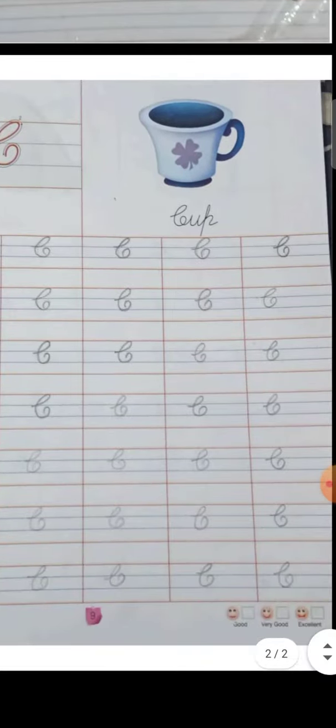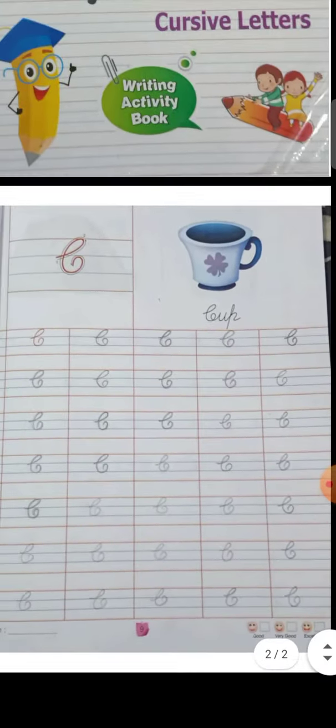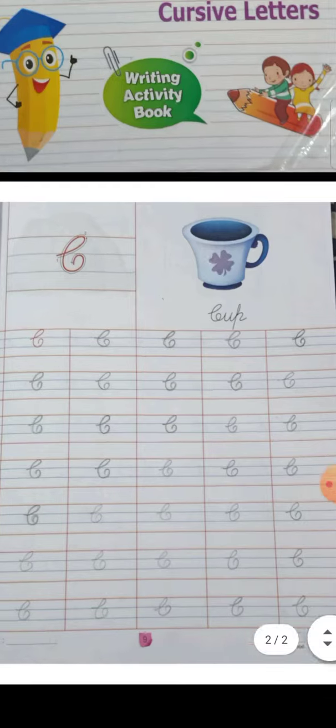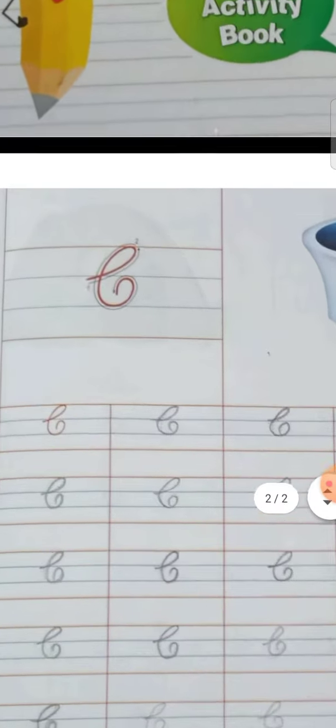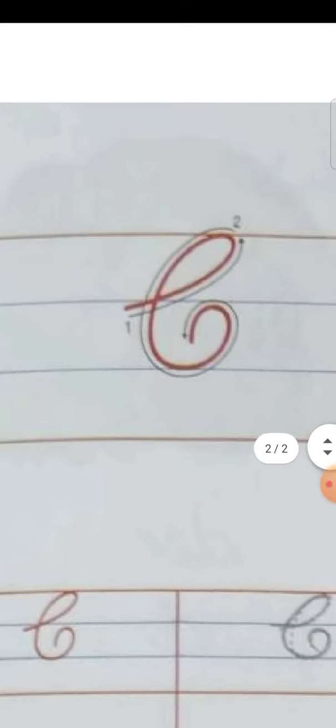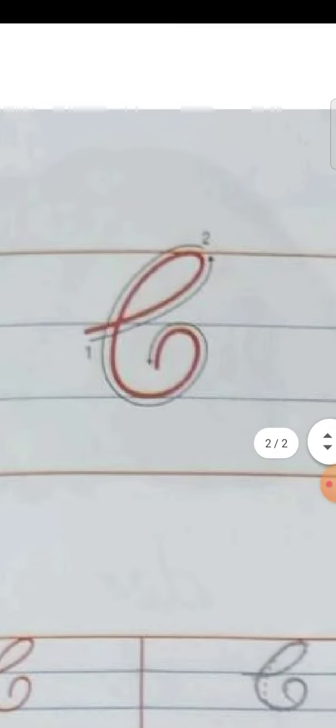Page number nine. Today I will make the alphabet C, capital letter C. So let's start now. This is your capital letter alphabet in cursive writing. This way we will make this picture.